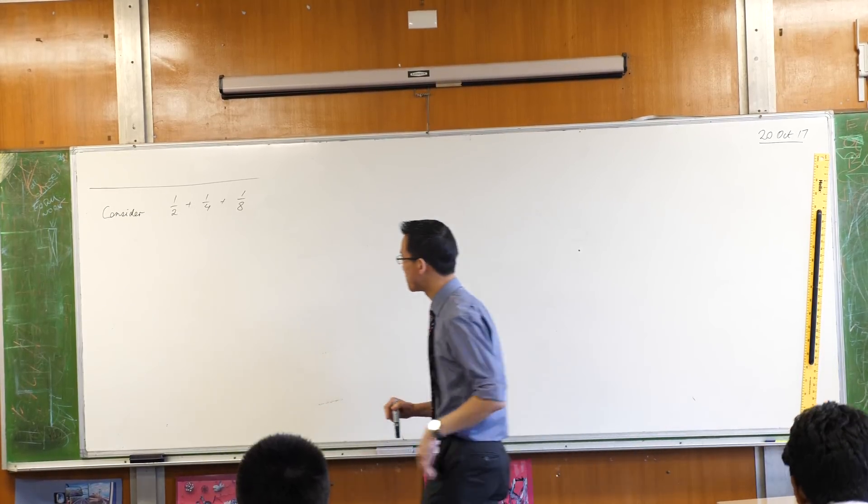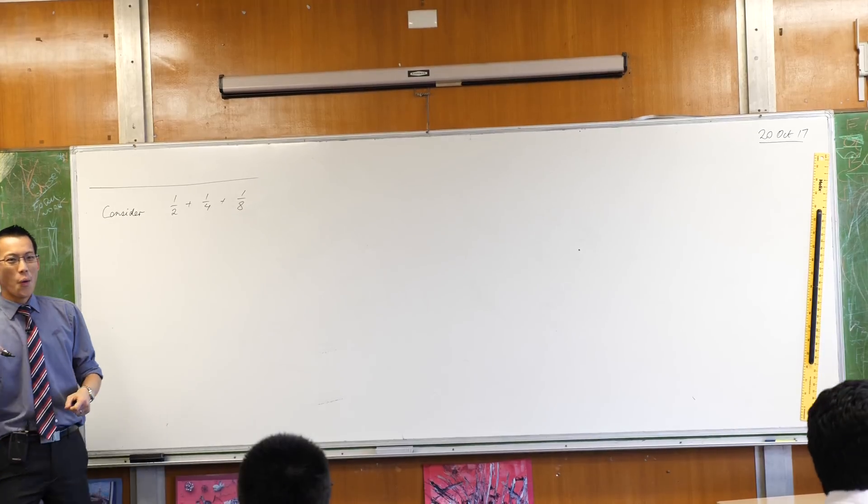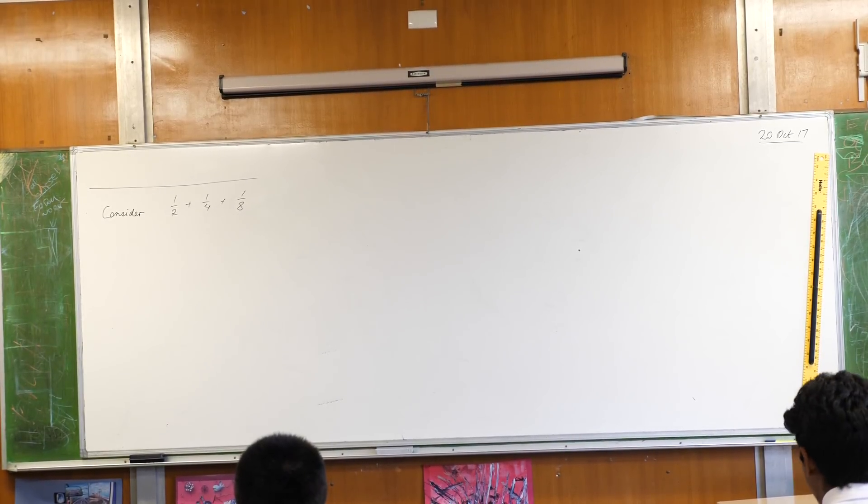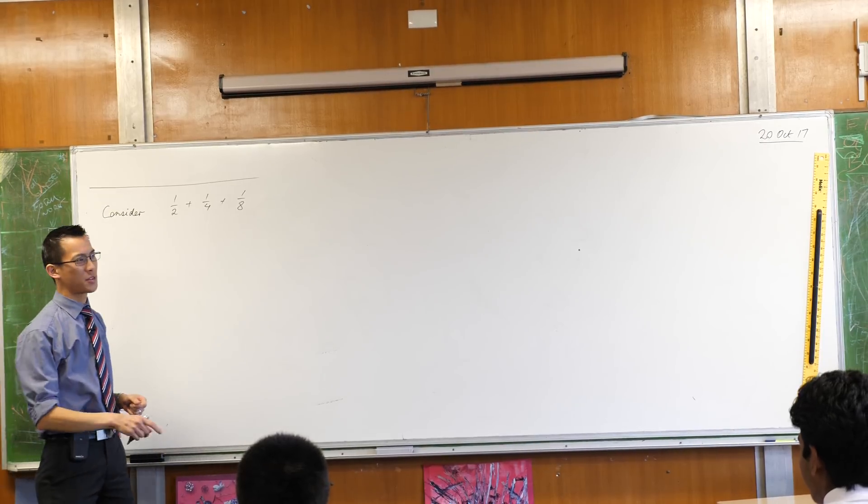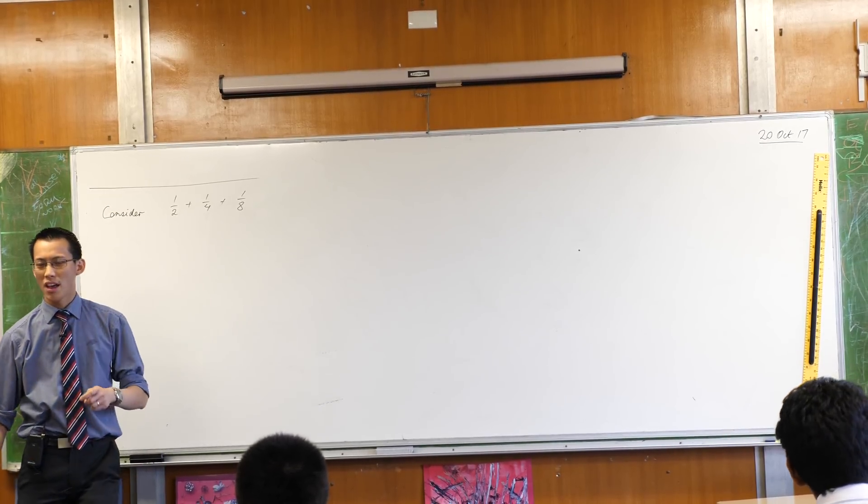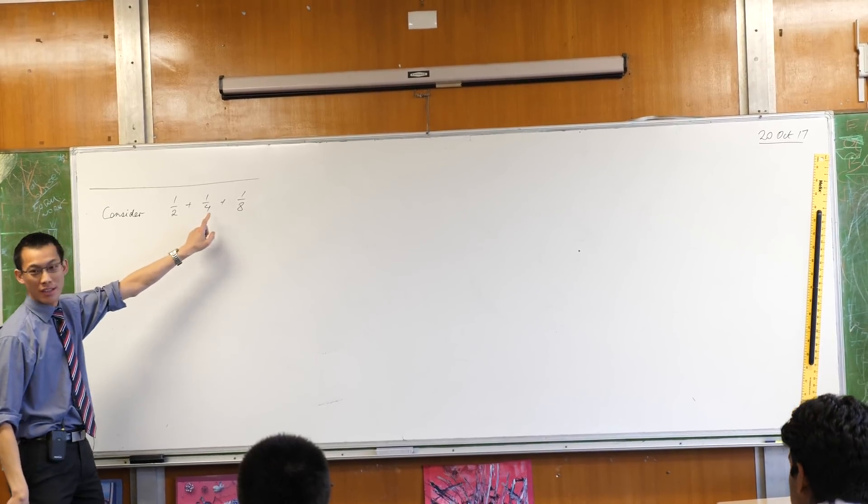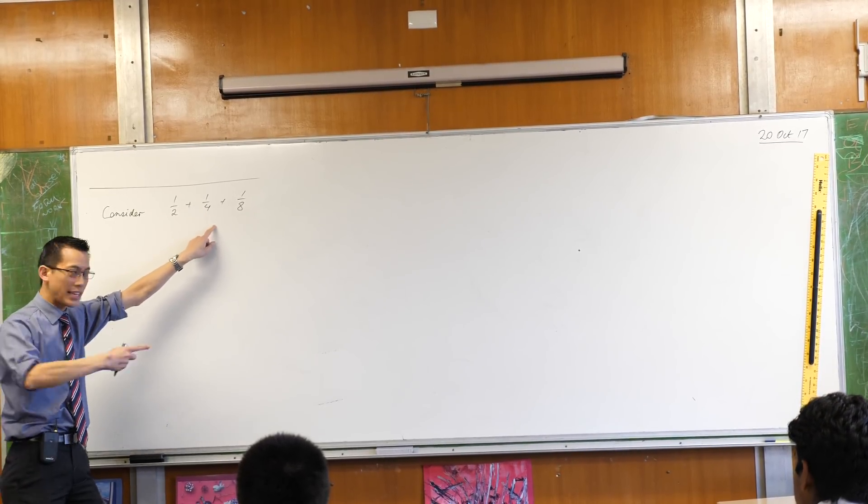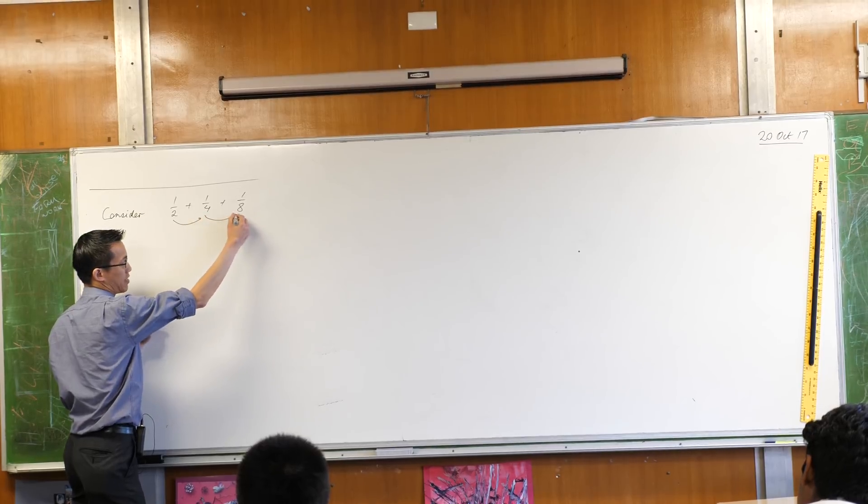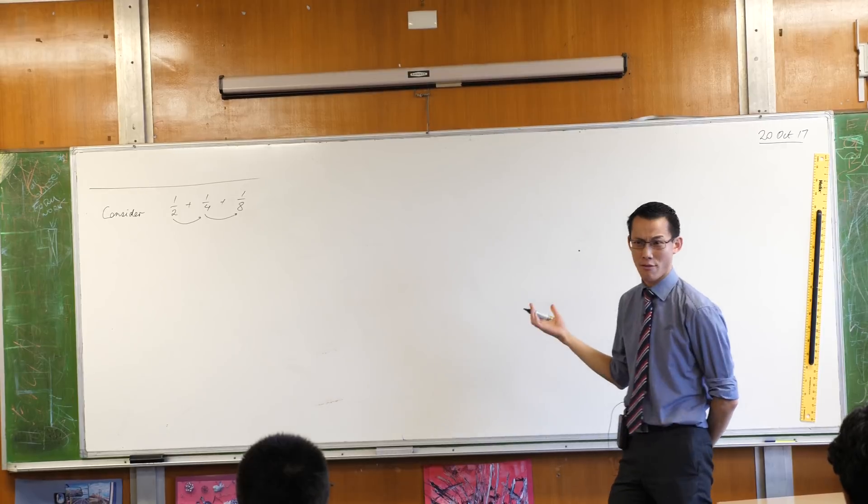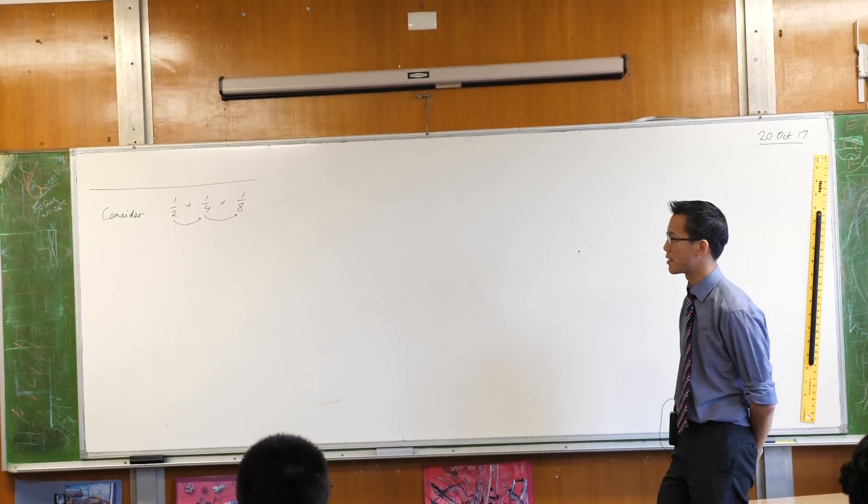This is a geometric progression. Here's how I know. When I look at one term to the next, the rule that gets me from one to the next looks like multiplication by a common ratio. In this case that ratio is a half. Fantastic.